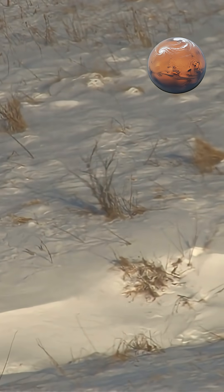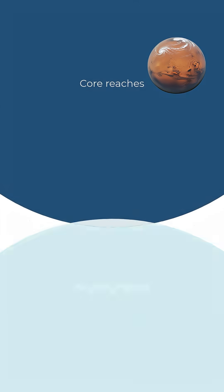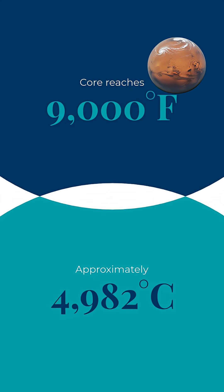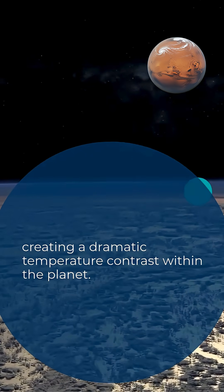Interestingly, despite these frigid surface temperatures, Uranus's core reaches approximately 9,000 degrees Fahrenheit, 4,982 degrees Celsius, creating a dramatic temperature contrast within the planet.